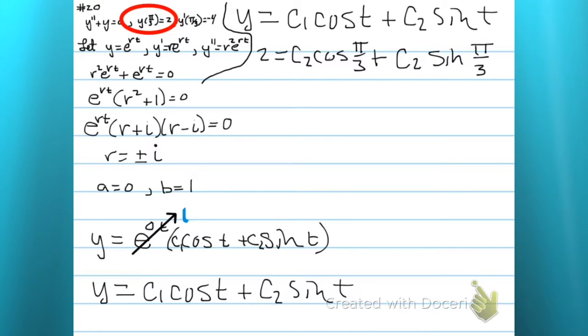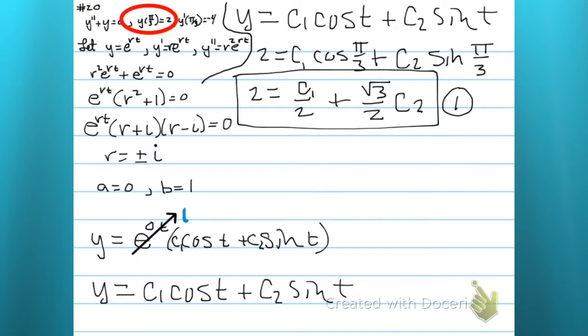Then your lack of trig skills kicks in. But you go ahead and you evaluate those two, and the cosine of pi over 3 is half, and the sine of pi over 3 is root 3 over 2. That's our first equation.